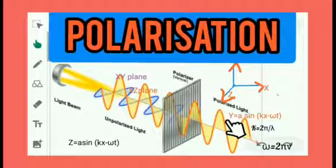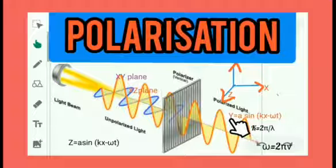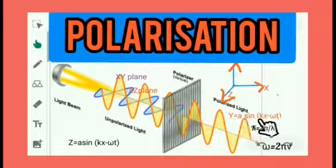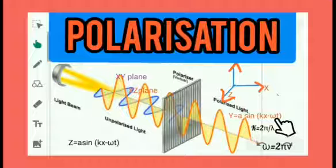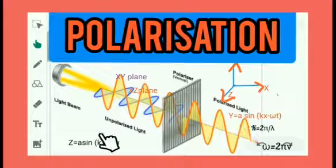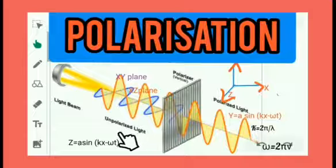The equation of the transverse wave propagating along the x-direction with vibrations in the x-y plane is: y = A sin(kx − ωt), where k is the wave number (propagation constant), k = 2π/λ, and ω is the angular frequency, ω = 2πν. Similarly, the equation of the wave propagating along x with vibrations in the x-z plane is: z = A sin(kx − ωt).